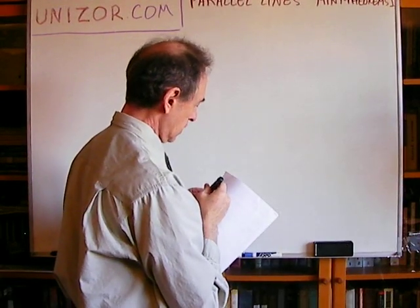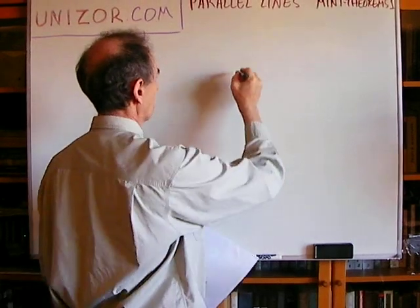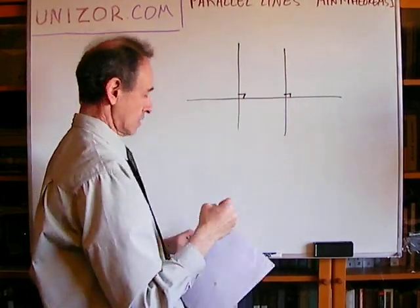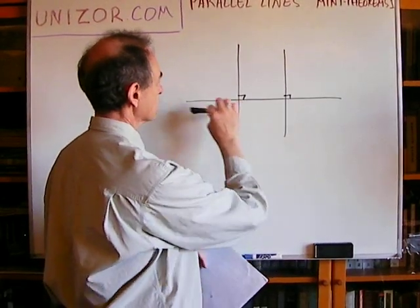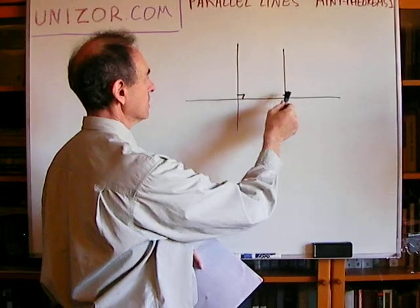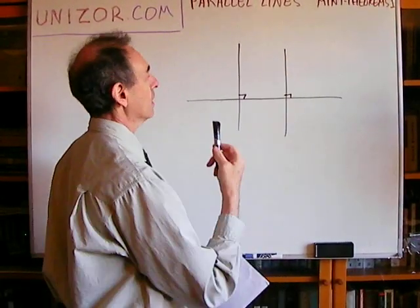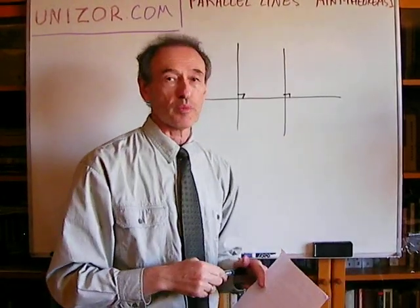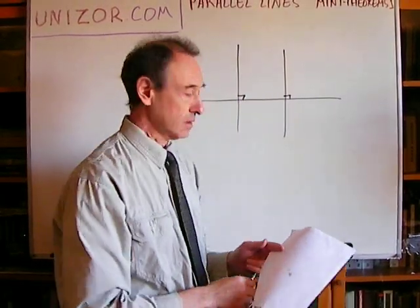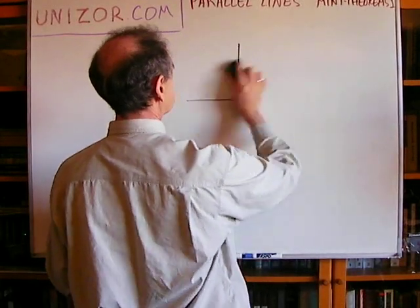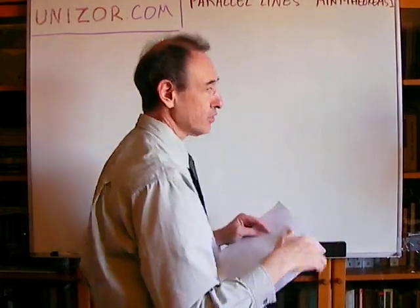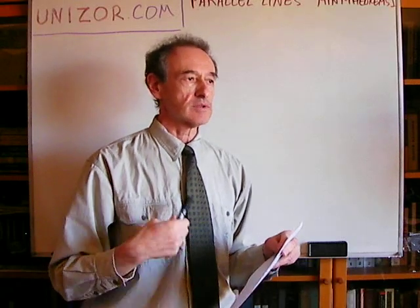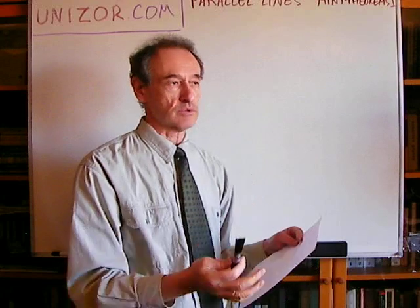Second: two perpendiculars to the same line are parallel to each other. Very similar. If you have two perpendiculars to the same line, these two perpendiculars should be considered as two lines with that line as a transversal. Since these are corresponding angles, and the congruence of corresponding angles is a characteristic property of parallel lines, these two lines are parallel among themselves. End of story. These are very simple theorems, but you have to use the properties of parallel lines and transversal relatively freely and be ready to apply them to simple problems.